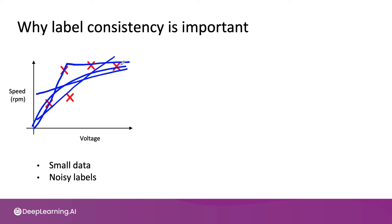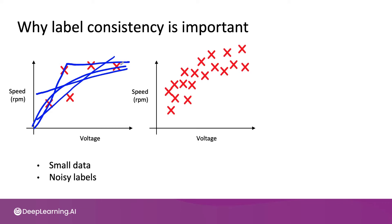Now, if you had a ton of data — this dataset is equally noisy as the one on the left, but you just have a lot more data — then the learning algorithm can average over the noisy data points, and you can now fit a function pretty confidently. It looks like the curve should be something like that.